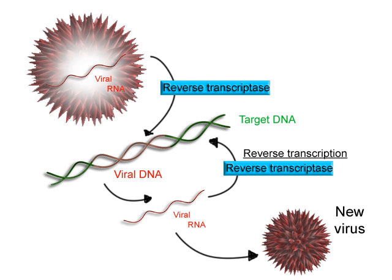This use of only the 3' to 5' DNA strand eliminates the need for the Okazaki fragments that are seen in DNA replication. This also removes the need for an RNA primer to initiate RNA synthesis, as is the case in DNA replication. The non-template strand of DNA is called the coding strand, because its sequence is the same as the newly created RNA transcript. This is the strand that is used by convention when presenting a DNA sequence. Transcription has some proofreading mechanisms, but they are fewer and less effective than the controls for copying DNA. As a result, transcription has a lower copying fidelity than DNA replication.